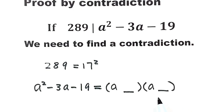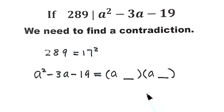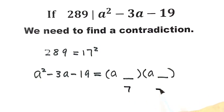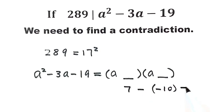The two numbers must satisfy two conditions. First, their sum equals negative 3. Second, their difference is a multiple of 17. You'll see why we need the second condition later in the proof. After trying different combinations, we get the two numbers: 7 and negative 10. Indeed, 7 plus negative 10 is negative 3, and 7 minus negative 10 is 17.